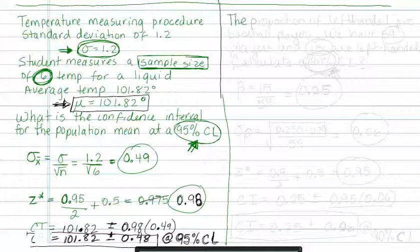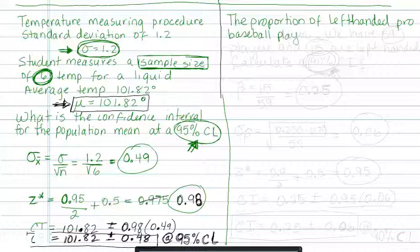The proportion of left-handed baseball players: we have 59 players that we're going to sample and 15 of them are left-handed. We want to calculate a 90% confidence interval.